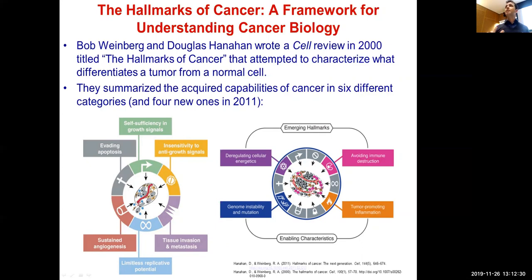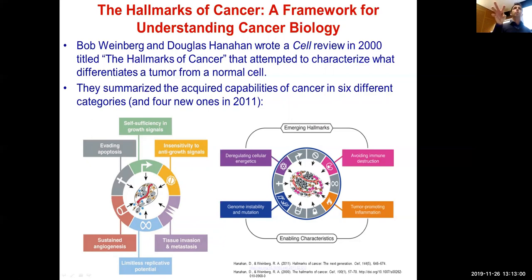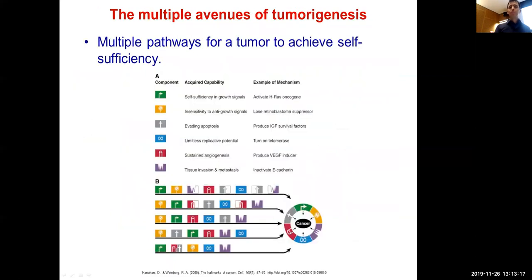Cancer needs energy to feed itself, so it sends signals for sustained angiogenesis to draw blood from the bloodstream. It must stop listening to signals telling it to stop growing. It must find ways to invade tissues, metastasize, and replicate infinitely. This framework is important for thinking about all these capabilities, which can be assembled in pretty much any order.